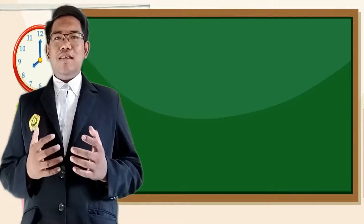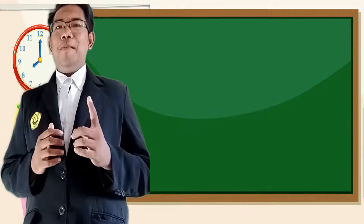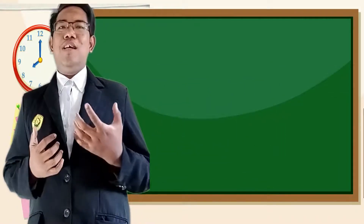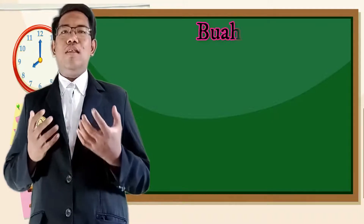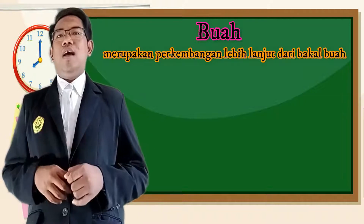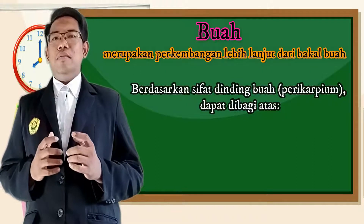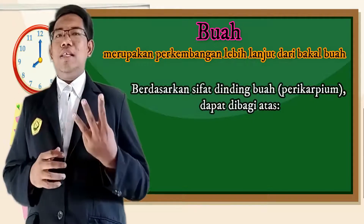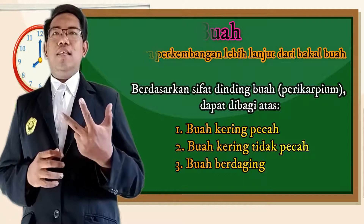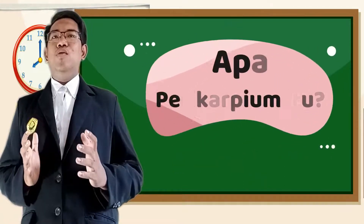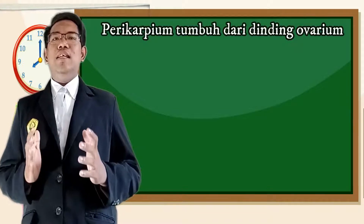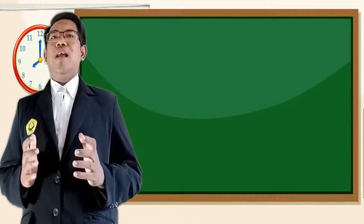Organ generatif yang kedua adalah buah. Buah merupakan perkembangan lebih lanjut dari bakal buah. Berdasarkan sifat dinding buah atau perikarpium, buah dapat dibedakan menjadi tiga macam: buah kering pecah, buah kering tidak pecah, dan buah berdaging. Perikarpium tumbuh dari dinding ovarium sebagai perkembangan lebih lanjut dari bakal buah.